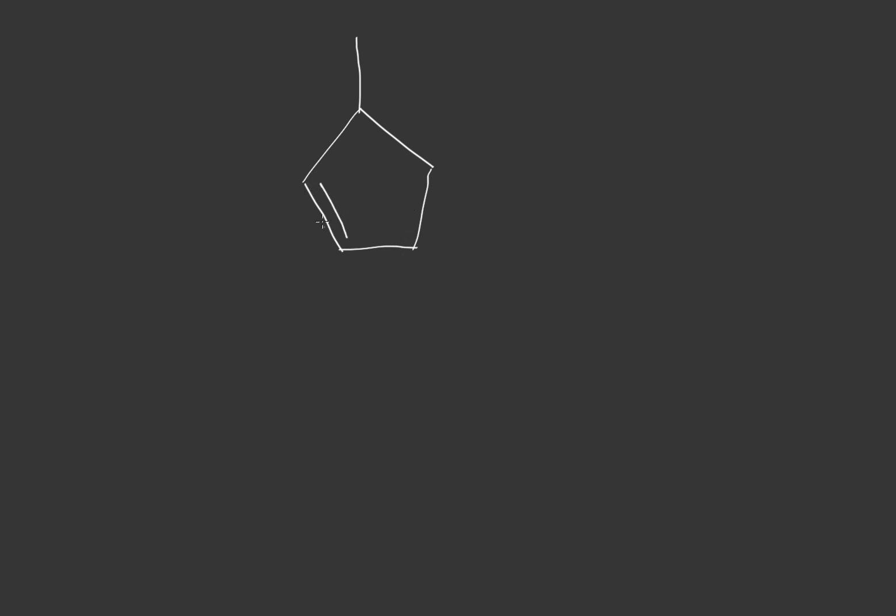The two carbons that are resonance stabilized are this one and this one. This one's a secondary while this one's a tertiary and they're both allylic. But tertiary is more stable, so we're just going to ignore this secondary and look at this one.